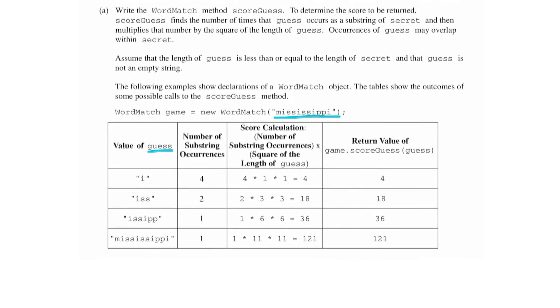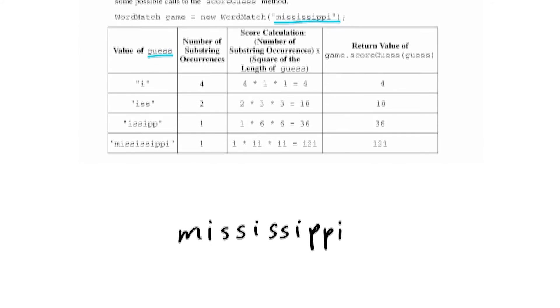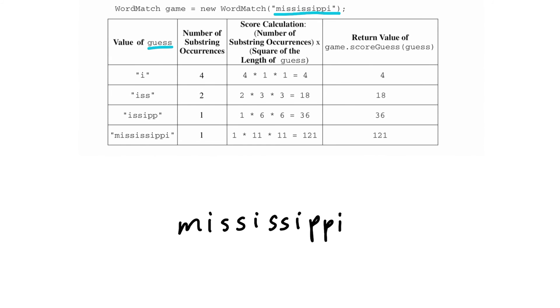Let's talk about it. I've written out our secret word here — it's Mississippi. If we look at this first guess, which is just the letter I, how would we figure out how many I's there are in the word Mississippi?